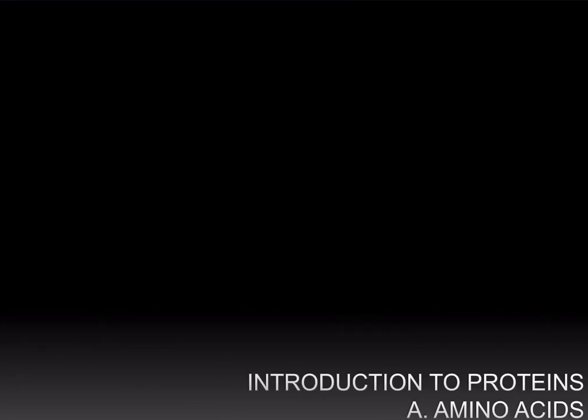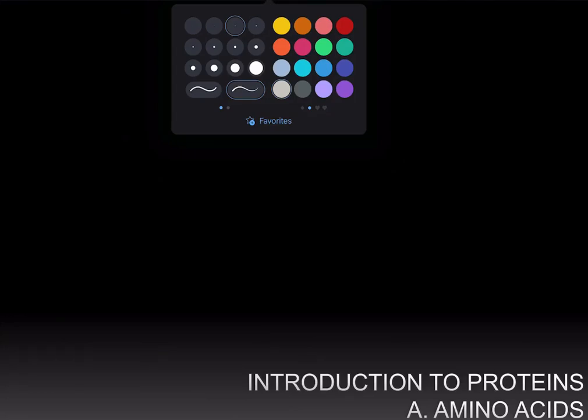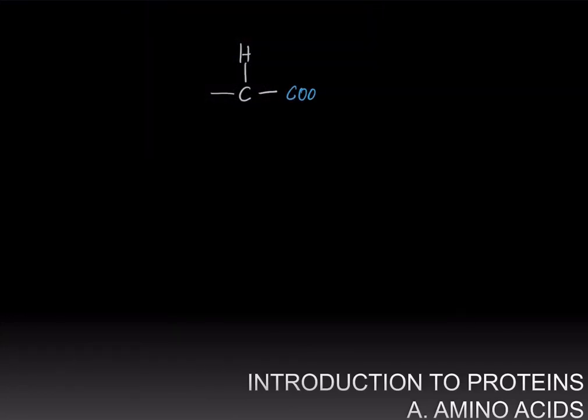Proteins are polymers of amino acids, and an amino acid has the following structure. There is a carbon, and on one side of this carbon is a carboxyl group. And on the other side of this carbon is an amino group.